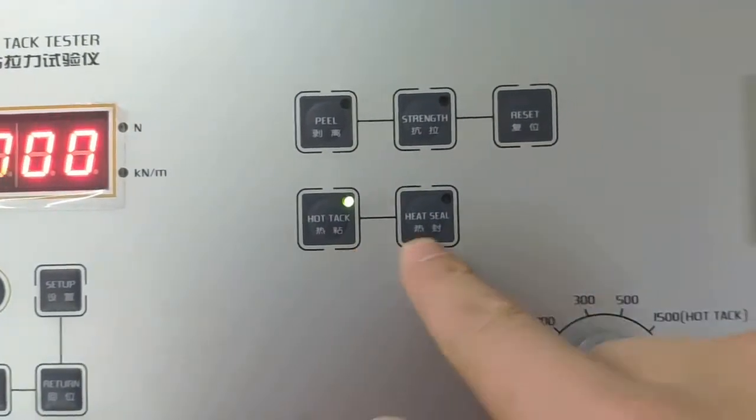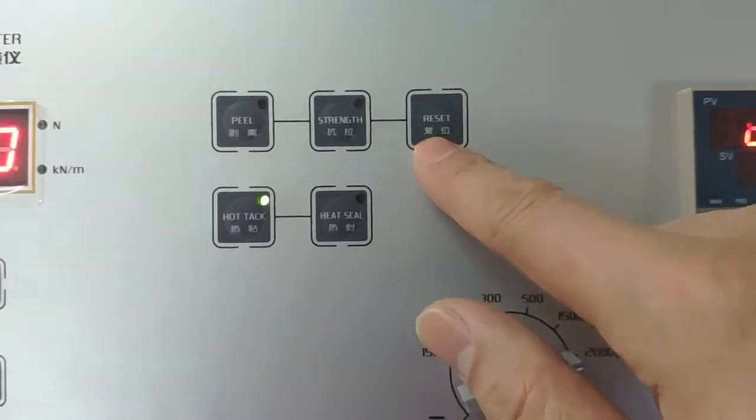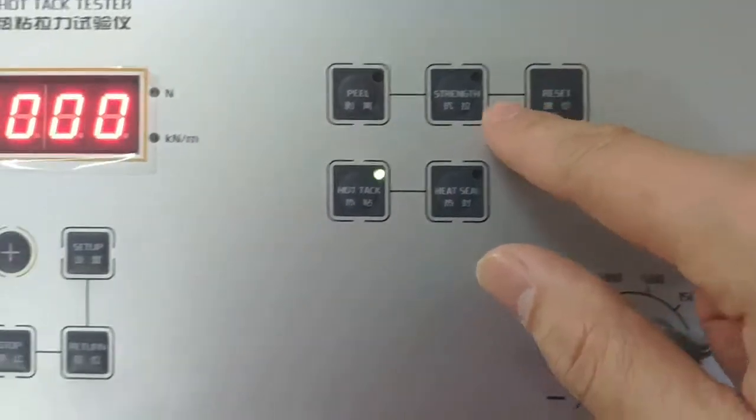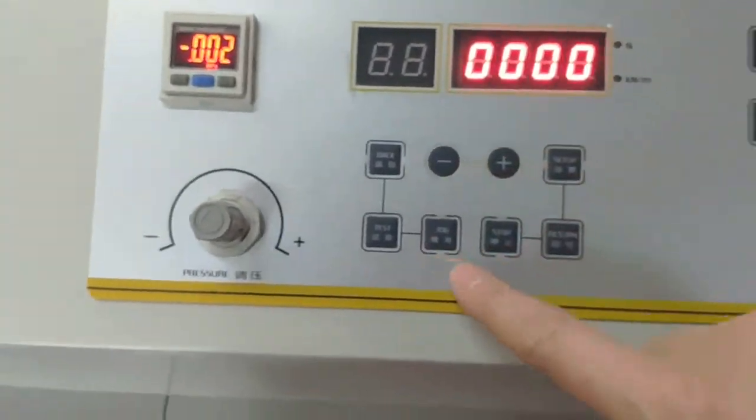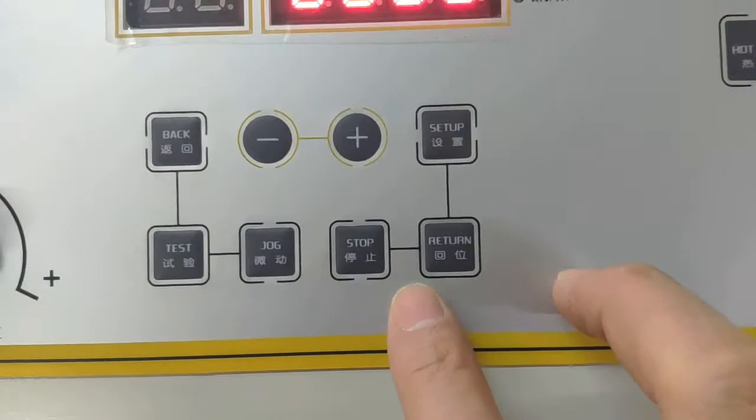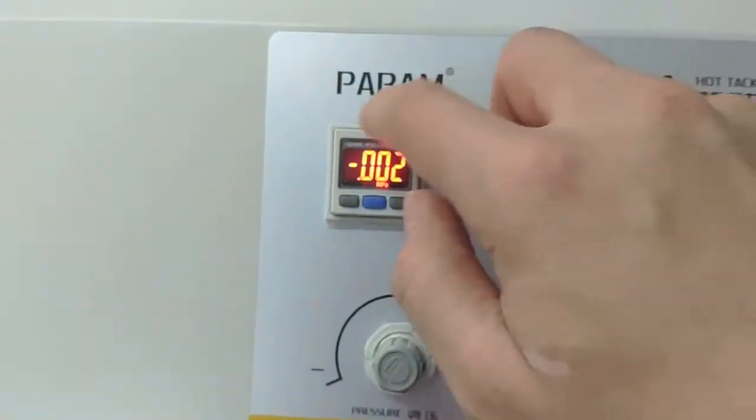These are the buttons for selecting different test modes. This instrument can do peel, tensile, hot tack, and heat seal. The reset button helps you recover from system error. This is the display and these are the buttons for different operations.